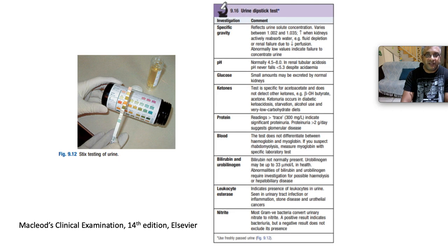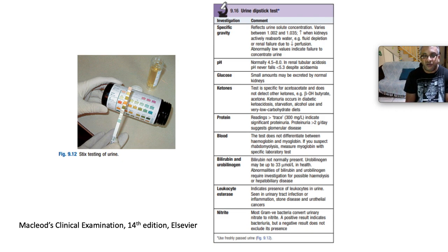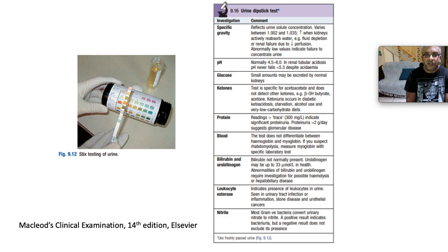Analyzing the urine dipstick: specific gravity reflects urine solute concentration, varying between 1.002 and 1.035 — increased with active water reabsorption in fluid depletion or renal failure due to diminished perfusion; abnormally low speaks to failure to concentrate urine. Normal urine pH is 4.5–8; in renal tubular acidosis, pH never falls below 5.3 despite acidaemia. Look for glucose — small amounts are normal, but above 2+ is pathological. Check ketones, protein, blood, bilirubin and urobilinogen, leukocyte esterase (speaking to UTI, inflammation, stones, or urothelial cancers), and nitrites (also indicating infection).